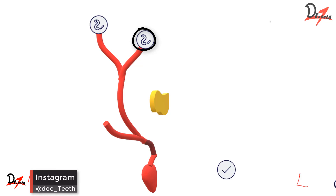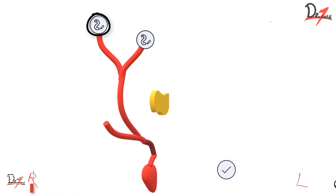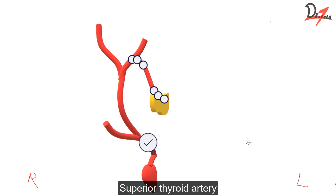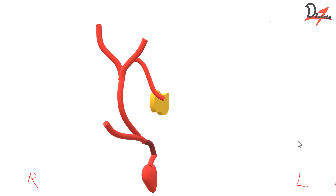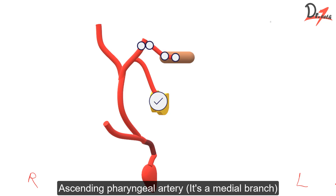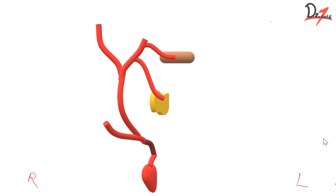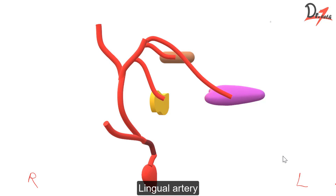Now, external, as the name says, it supplies the structures present external to the skull and those in front of the neck. While the internal carotid artery will supply the structures within the skull and in the orbit. So the first branch is the superior thyroid artery — obviously it is supplying the thyroid gland, which is in the neck anteriorly, so this is an anterior branch. Now let us suppose this is the pharynx, which is obviously posteriorly. So we have this branch called the ascending pharyngeal artery — a medial branch. Then I am drawing a tongue and this will be the lingual artery, which is also an anterior branch.